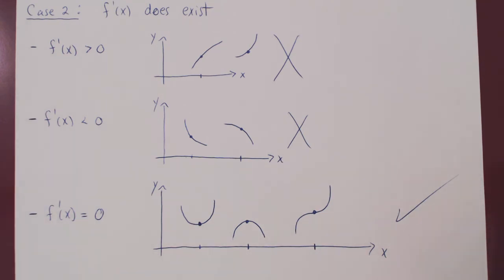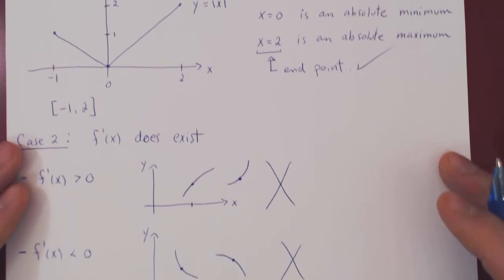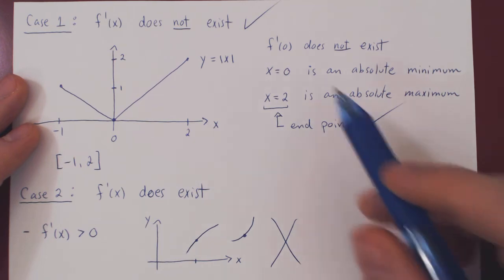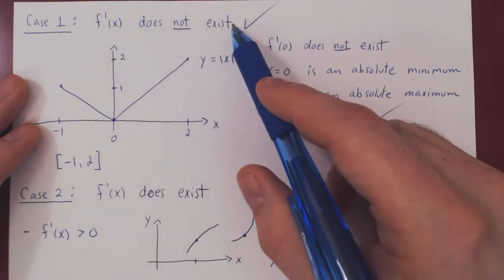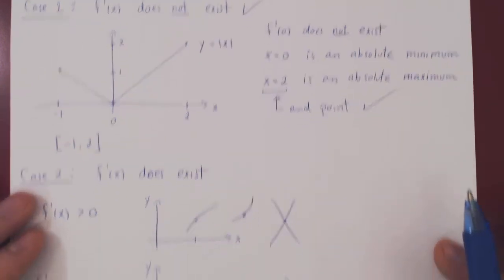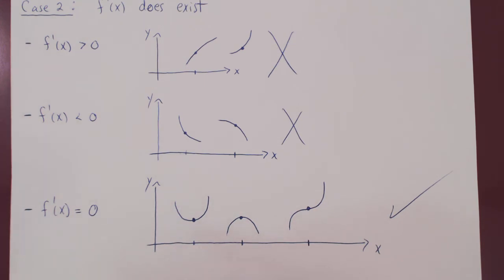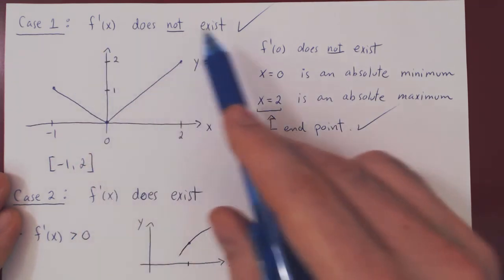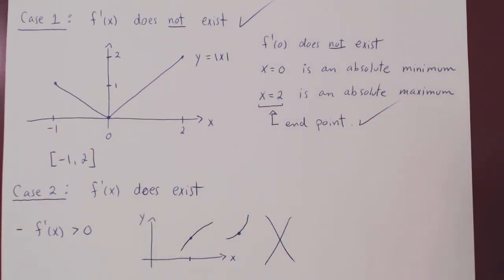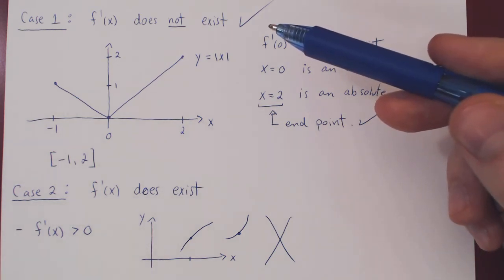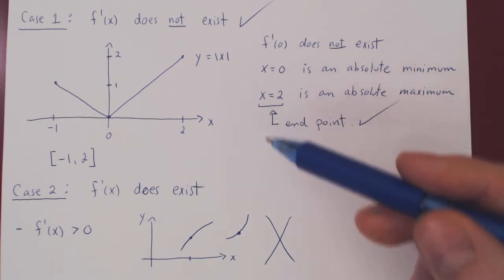So let's go back to the beginning conclusion. On an interval, a function can only attain a maximum or minimum value at a point where the derivative does not exist, at an endpoint of the interval, or at a point where the derivative is zero. We can combine the first and third into one: points where the derivative is equal to zero or undefined are what we call critical points. A function can only attain a maximum or minimum value at a critical point or at an endpoint of the interval.